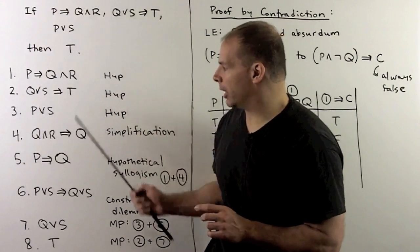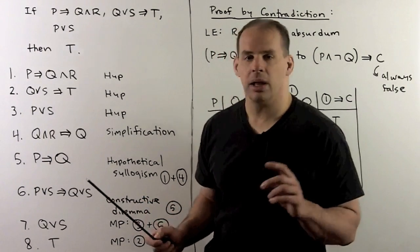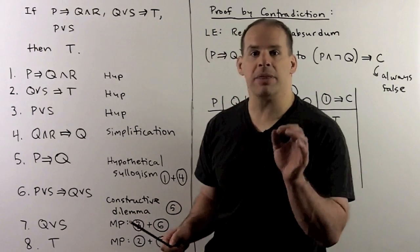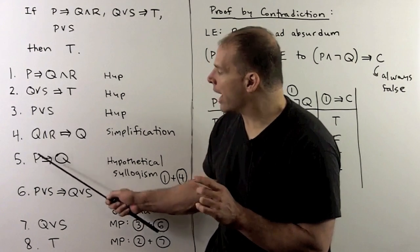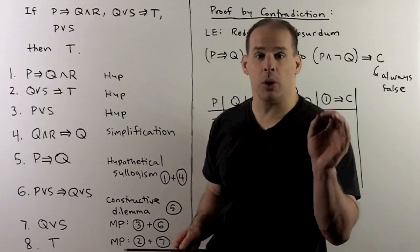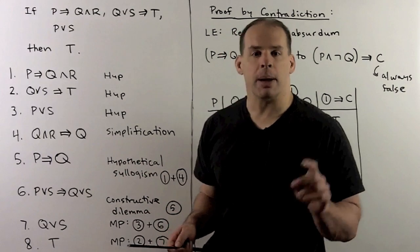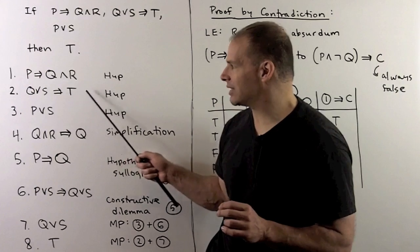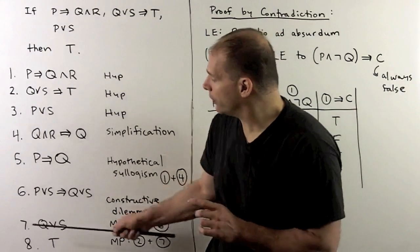To get q and r into the picture, I invoke simplification: q and r implies q. Pairing that with statement one and using hypothetical syllogism gives p implies q. I then add an or s to each side using constructive dilemma, giving p or s implies q or s. Applying modus ponens with statement three, p or s, gives q or s. Then from q or s and q or s implies t, modus ponens gives t — our conclusion. This is the proof of our theorem.